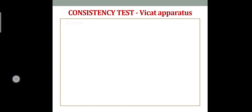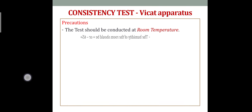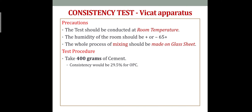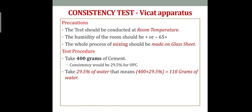For the test, we need a Vicat apparatus and a weighing balance. Precautions include maintaining room temperature and humidity in the range of plus or minus 65%. Mixing is done in ceramic bowls on a glass sheet. Usually 400 grams of cement is taken and about 29.5% water is added — approximately 118 grams of water.